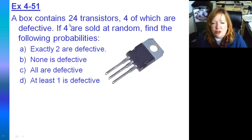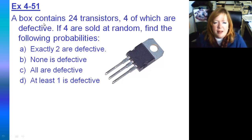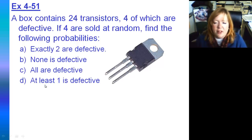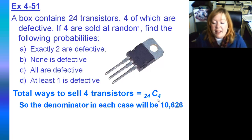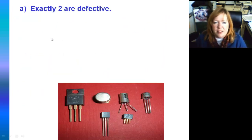Let's talk about transistors. This is a transistor — it's what led to the microchip, invented in the 50s. Let's say a box contains 24 transistors, four of which are defective. If four are sold at random, find the following probabilities: exactly two are defective, none are defective, all are defective, and at least one is defective. Since all of these deal with selling four transistors, the total number of ways to sell four is 24 choose four, and that will be our denominator in all cases A through D.